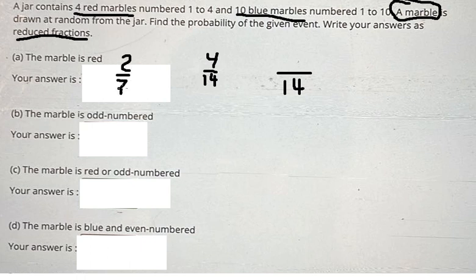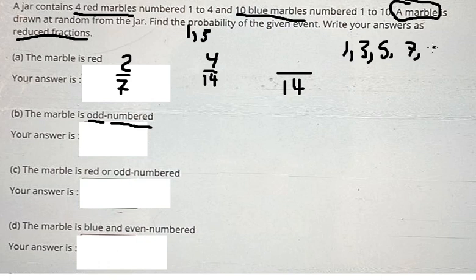Question (b): the marble is odd-numbered. For this number in here we have 1, 3, this one we have 1, 3, 5, 7, and 9. So the total in here is 7 over 14, so we have 1 over 2.